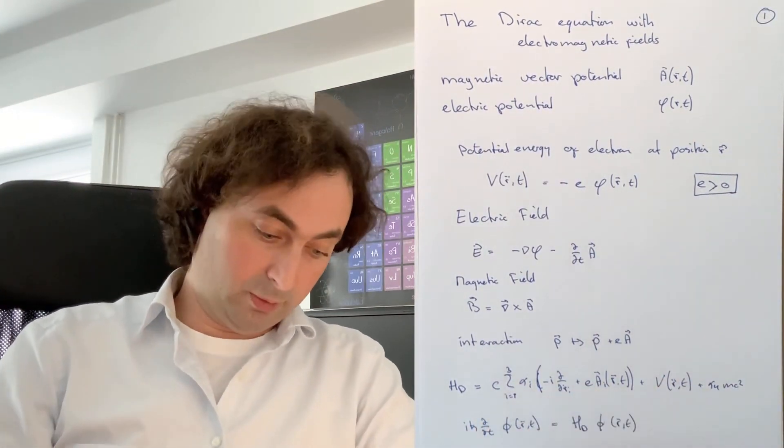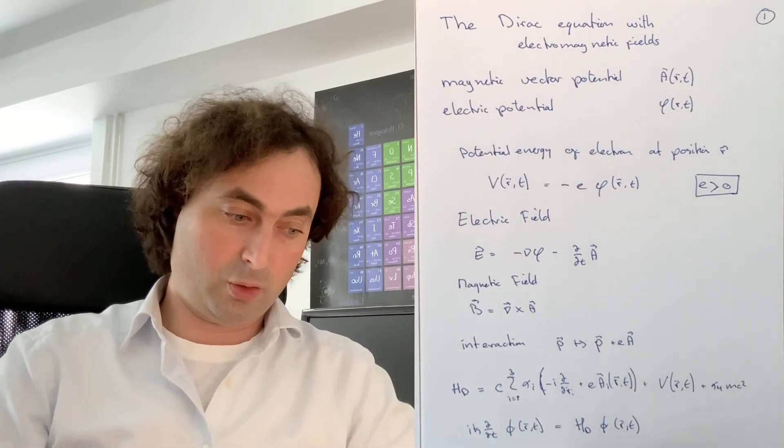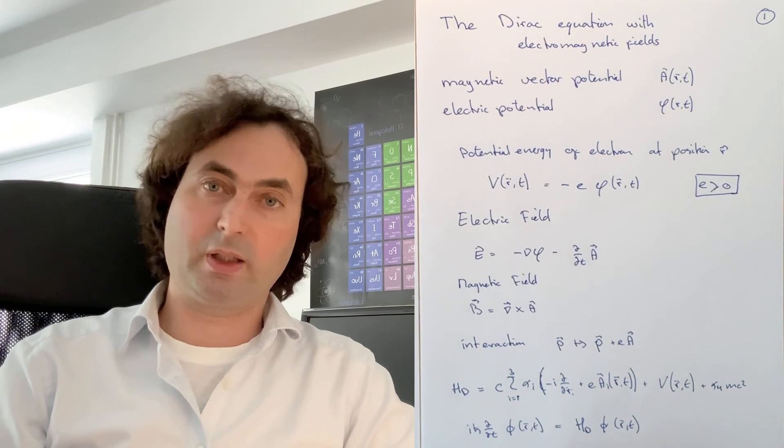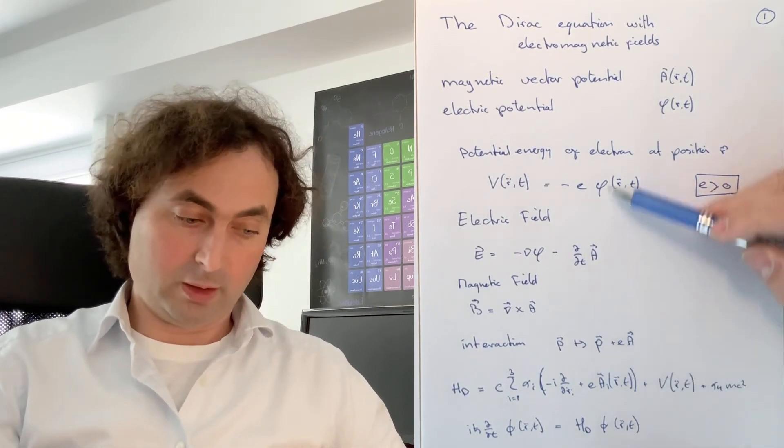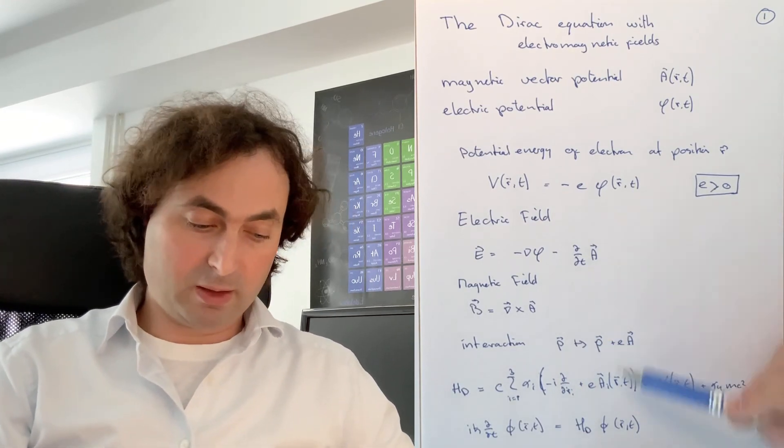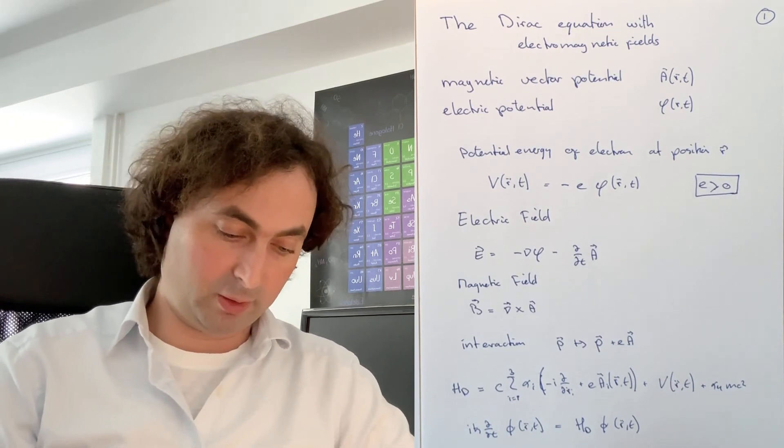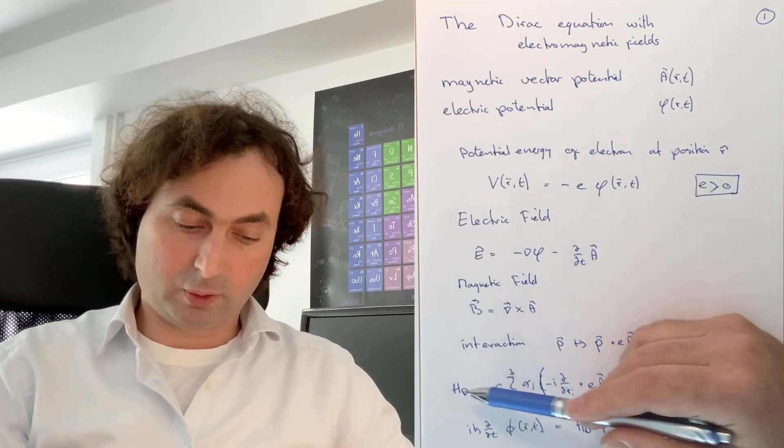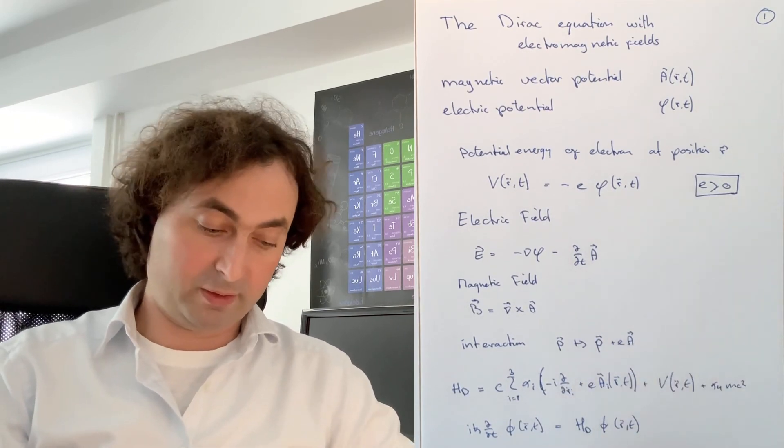So a rather short video that shows you how to include electromagnetic fields into the Dirac equation. For the main part, we just follow what we know from classical electrodynamics and make the same substitution as you can do for classical electrodynamical interactions, but now of course in the Hamiltonian where you act on the wave function, having operators in there.